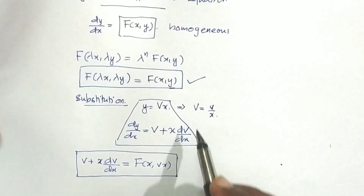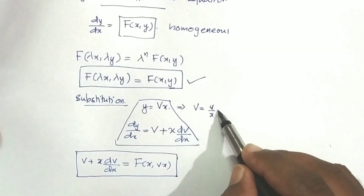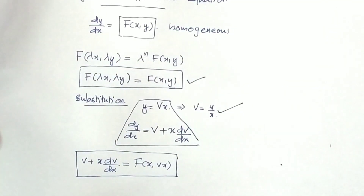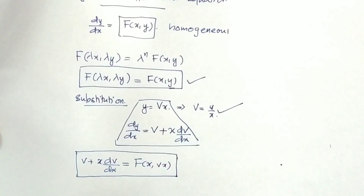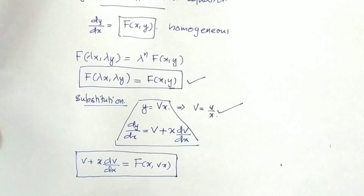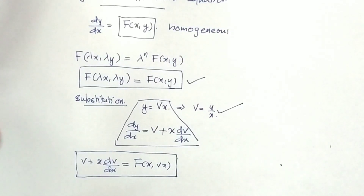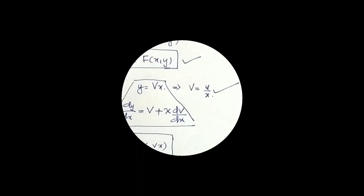After solving, wherever v appears we must resubstitute. Since v = y/x, we substitute back to get the final answer in terms of x and y. This is the complete procedure for homogeneous differential equations. Now let us look at a question.